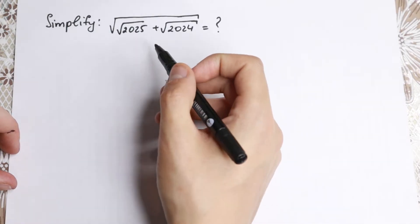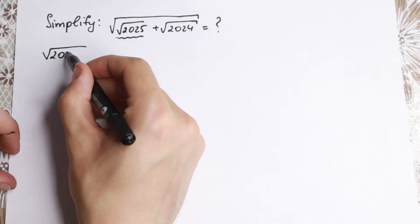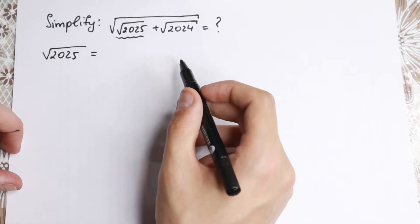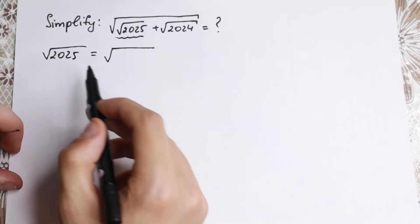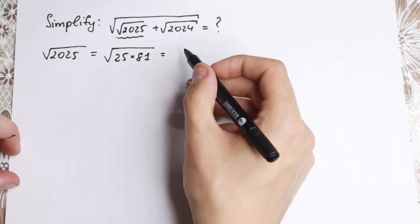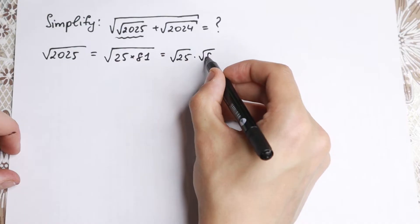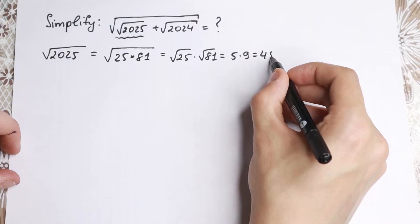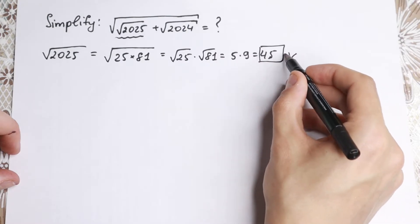Okay, we have the square root of 2025 — let's work with this first element. How can we simplify this? We know that 2025 is really good to write as 25 times 81. So if we multiply 25 by 81, we get the square root of 25 times the square root of 81, which equals 5 times 9, equal to 45. So we've simplified our square root sign and now we have 45.